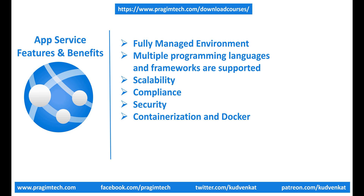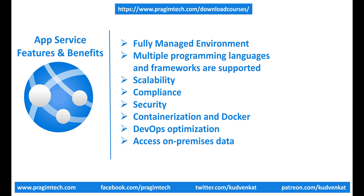We'll discuss how to do all these in our upcoming videos. DevOps, automation, and optimization is another benefit. Set up CI/CD — continuous integration and deployment — with Azure DevOps, GitHub, Bitbucket, Docker Hub, or Azure Container Registry. If you still have some of your data on your own on-premise servers, you can still access it using hybrid connections and Azure Virtual Networks. So there is support for accessing on-premise data as well.